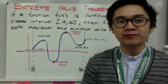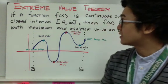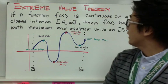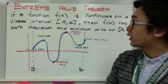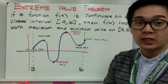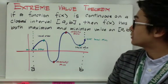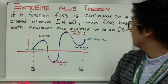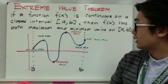By definition, the extreme value theorem states that if a function f of x is continuous on closed interval a, b, then f of x has both a maximum and minimum value on interval a, b.